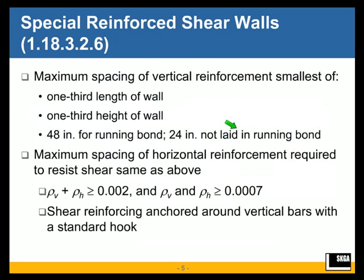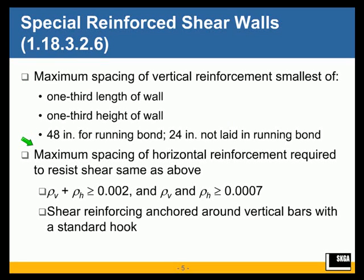For the special reinforced shear wall, there are limitations on maximum spacing: one-third the length of the wall, one-third the height of the wall, 48 inches for running bond, and 24 inches for not running bond — these are the maximum spacings of vertical reinforcement. There are similar requirements for maximum spacing of horizontal reinforcement required to resist shear.